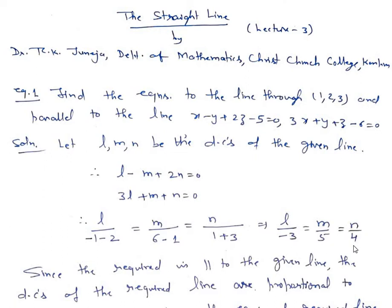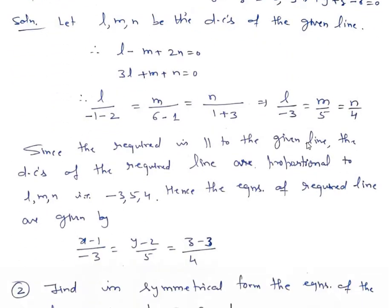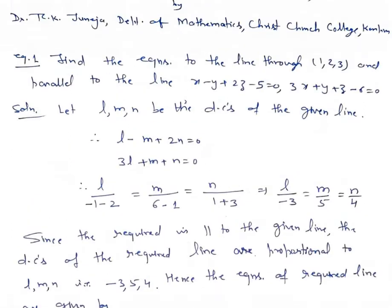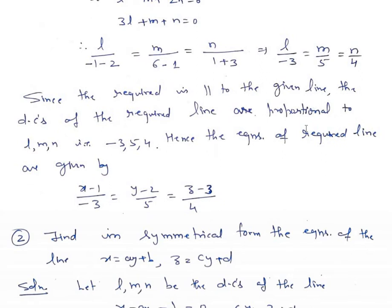That gives l upon minus 3 equals m upon 5 equals n upon 4. These are the direction ratios of the line we want to find, which is parallel to the given line, so direction ratios of both lines are proportional. Because the line passes through (1, 2, 3), the equation of the required line is: x minus 1 upon minus 3 equals y minus 2 upon 5 equals z minus 3 upon 4.